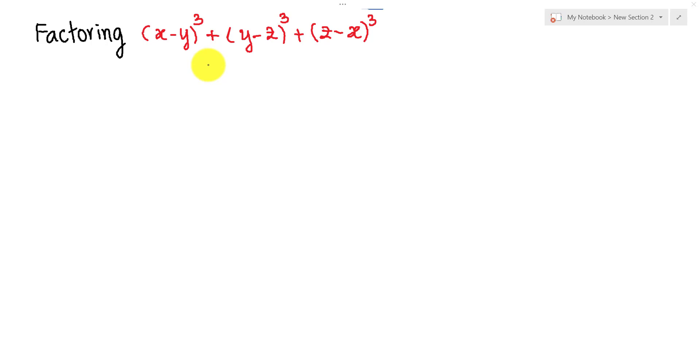For this problem, we use the rule: if a+b+c = 0, then we get a³ + b³ + c³ = 3abc.